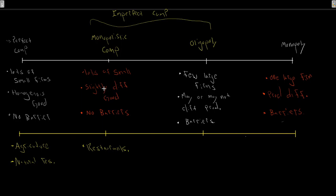They all offer burgers, but they all have their own take on the burger. Only McDonald's can sell a Big Mac — they have a monopoly over their version of the cheeseburger. Only Burger King can sell the Whopper; only A&W can sell the Teenburger. They all just have burgers, but they have a monopoly over their version of it. And so monopolistic competition explains that.